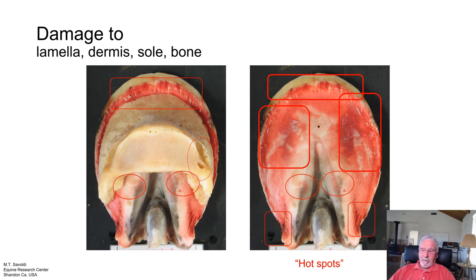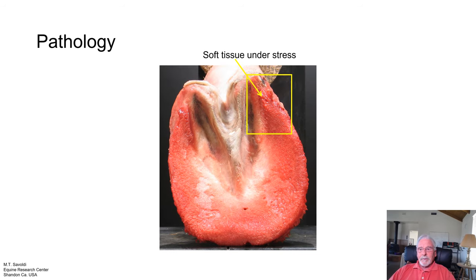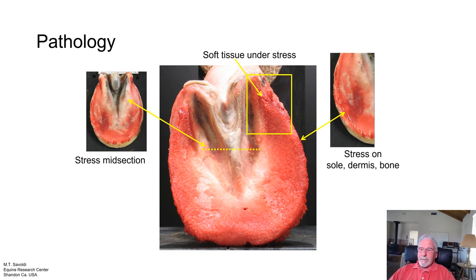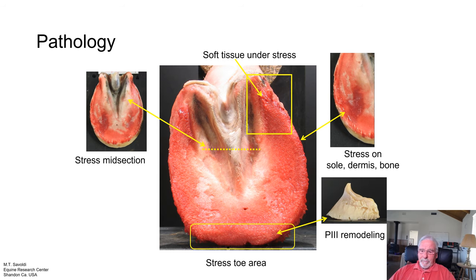Here's stress in our heel area. Let's look at soft tissue here. You can see the damage through the midsection — the bone is pressing in here, causing the sole to wrap around bone, causing this curvature. Here we have stress inflammation in the toe area and rounding to the dermis, which is causing stress to the bone in this area.